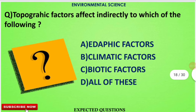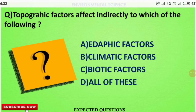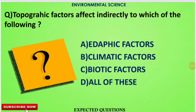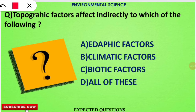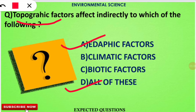Question number seven: topographic factors affect indirectly which of the following factors? The correct option will be option number D — all of these — because topographic factors affect edaphic factors related to soil, climatic factors, as well as biotic factors.